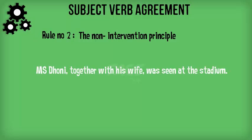Another example: 'MS Dhoni, together with his wife, was seen at the stadium.' The prepositional phrase here is 'together with his wife,' which according to our rule should not affect the number of the subject. Our subject here is 'MS Dhoni,' which is singular. Hence, we use a singular verb.